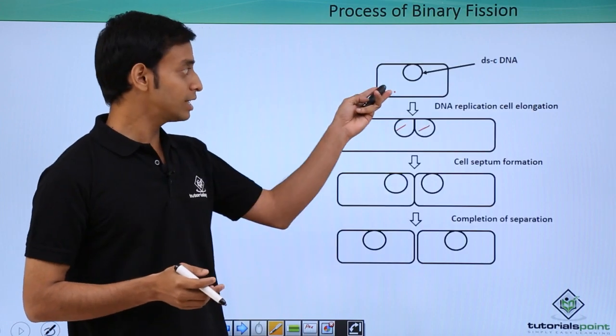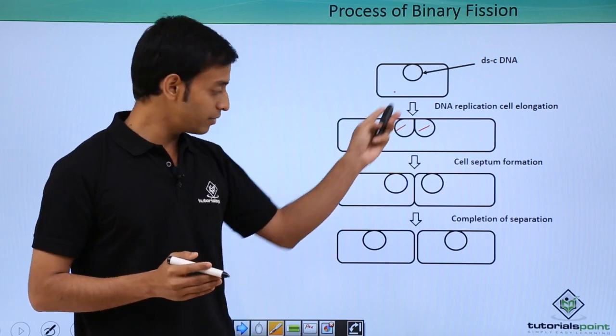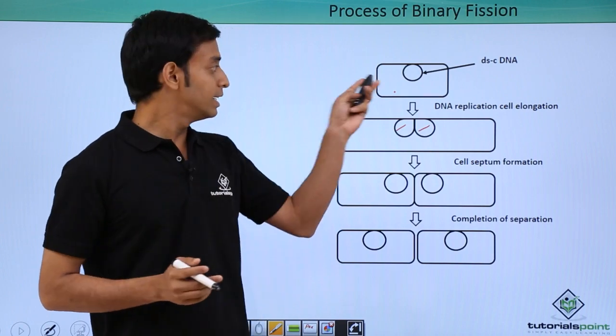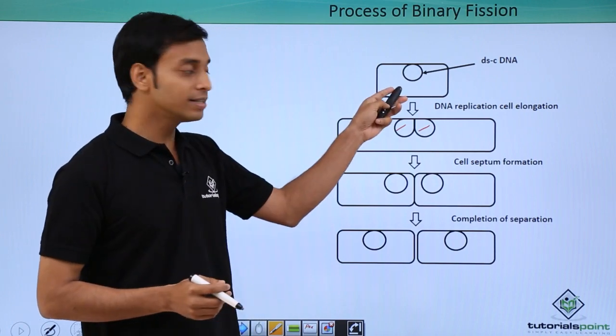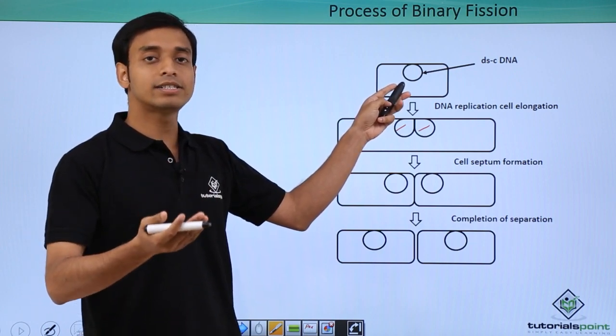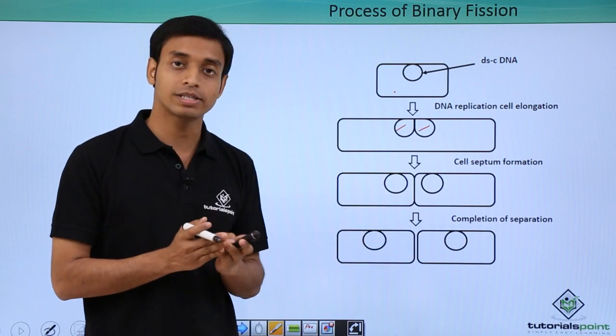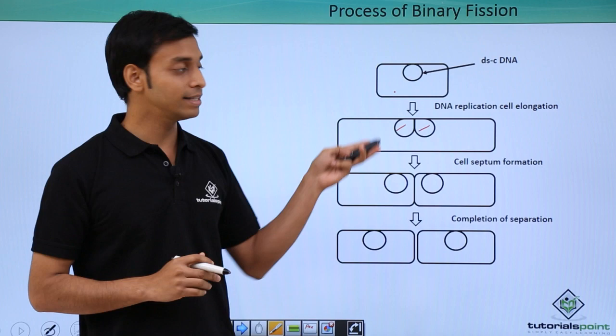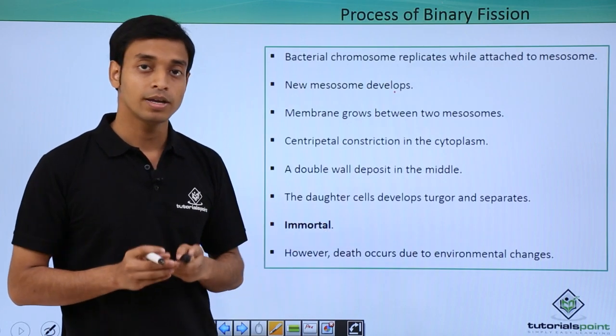After this, what happens? These cells can be called immortal. Why? You can see this is the parent cell. It was a single cell. It divided into two new cells. Now if I ask you a question, did this cell die? The answer is no, because we see the parent cell has divided its content, cytoplasmic content as well as the DNA, into two daughter cells equally. So there is no death for this cell. Hence, these cells can be called immortal cells.